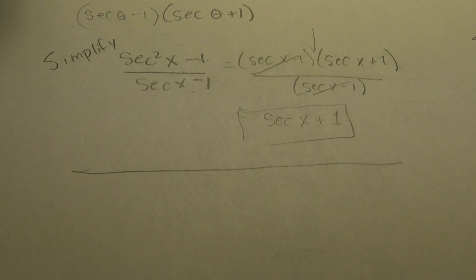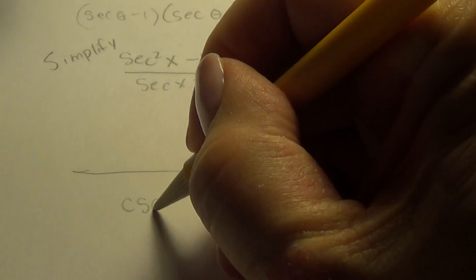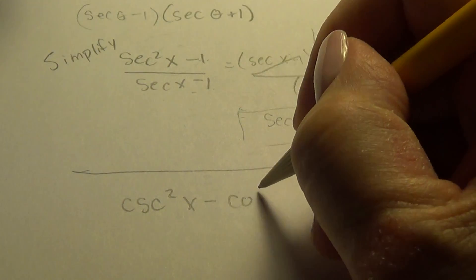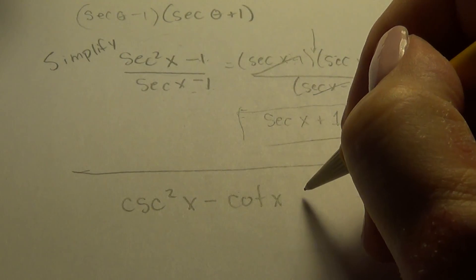Alright, another kind of factoring that you need to look for in these simplified problems, simplifying problems, is this kind of factoring. Suppose we have, yeah, we'll go for gold here. Let's say cosecant squared x minus cotangent x minus three.